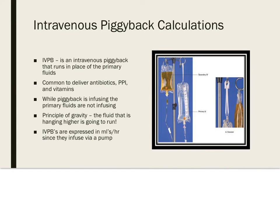Next, let's talk about intravenous piggybacks, often referred to as IVPBs. This is fluid that runs in place of the primary fluid. We usually give IV piggybacks of antibiotics, vitamins, proton pump inhibitors, and various other drugs. While the piggyback is infusing, the primary fluids are not infusing. Also, the piggyback or secondary bag must hang higher than your primary IV, because it runs on the principles of gravity.